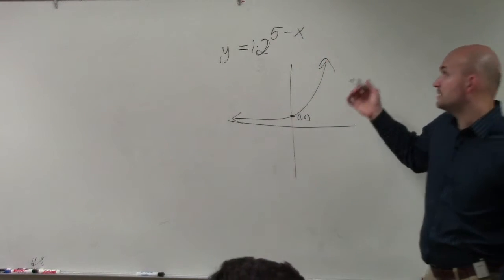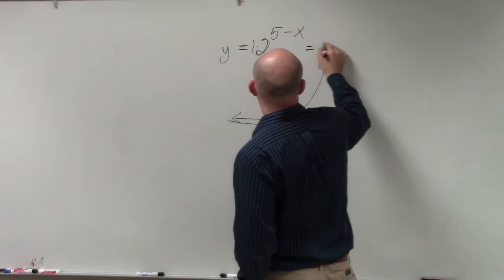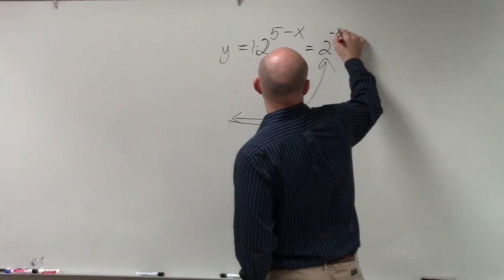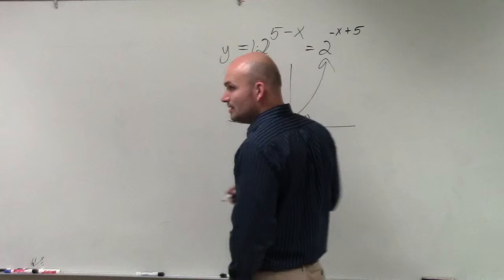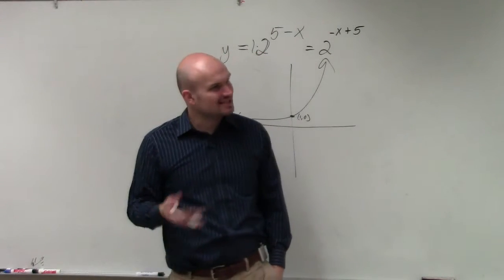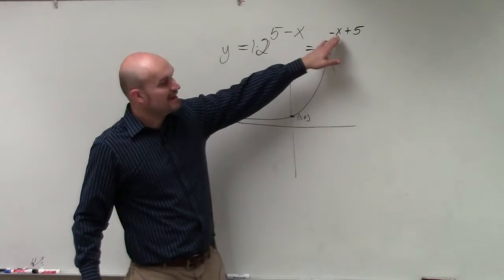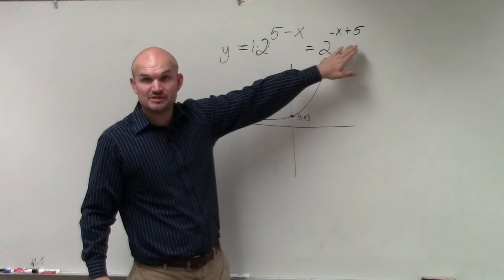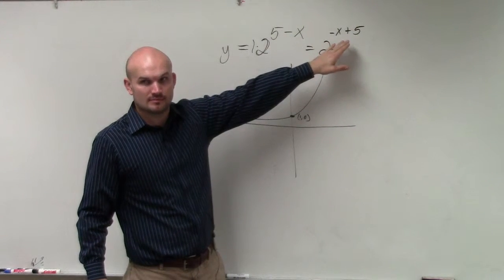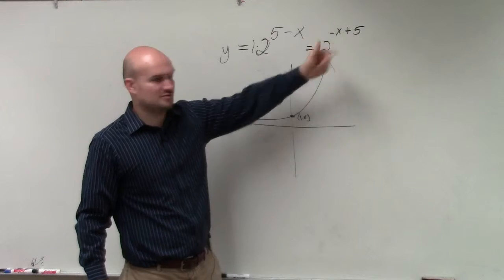So what I would recommend doing is rewriting this equation as 2 to the negative x plus 5. Now, hopefully, you guys can see it's a little bit easier to understand: hey, we're going to have a reflection and a horizontal transformation, right? Because that's what those transformations were.